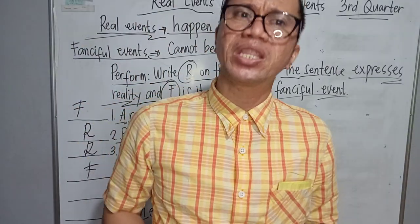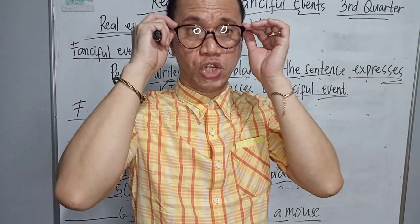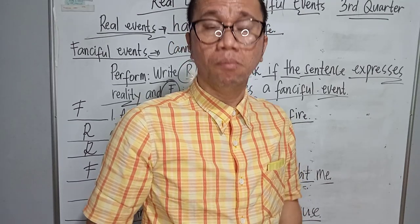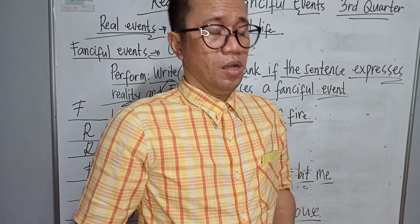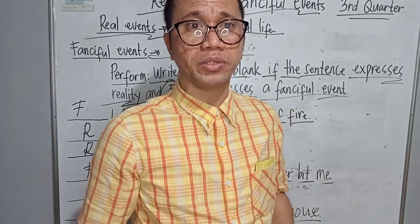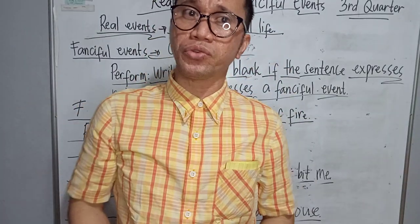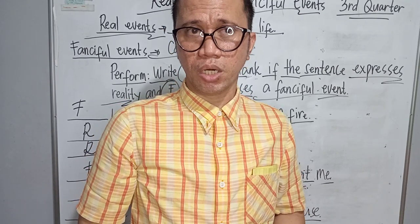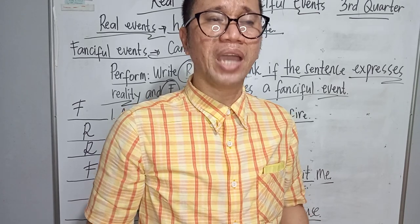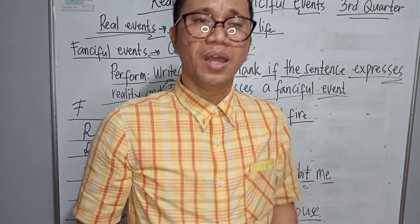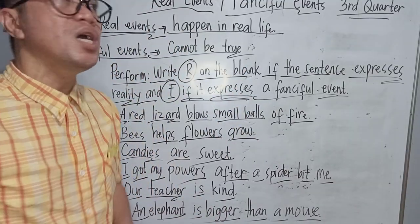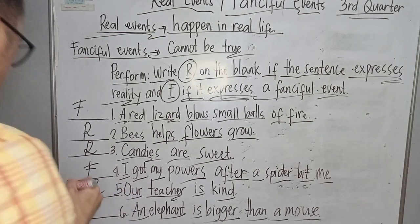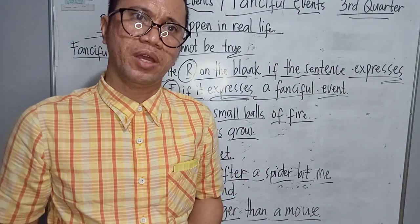Number five: Our teacher is kind. Remember, this happens in real life — most of our teachers are kind and devoted to their work. Being a teacher means being a pedagogue, a second parent in school. Teachers help students not only in reading and writing, but in everything. It is a continuous obligation. So we are going to write R, because it happens in real life situations.